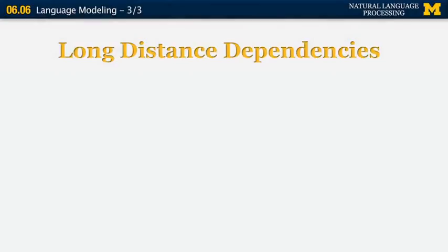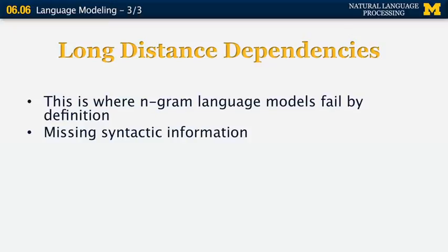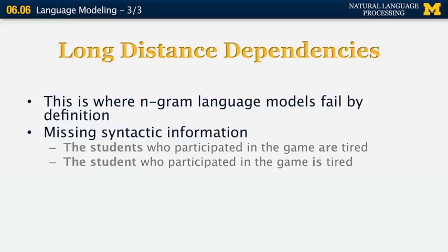Language models don't model long-distance dependencies very well. N-gram language models fail at this by definition, since they're only allowed to look one or two words back. For example, in 'The students who participated in the game are tired,' the word 'are' is conditional on 'students,' but there are five intervening words. Any n-gram model shorter than six grams will miss this dependency and won't distinguish it from 'The student who participated in the game is tired,' where agreement also spans more than five words.